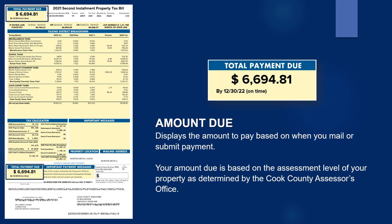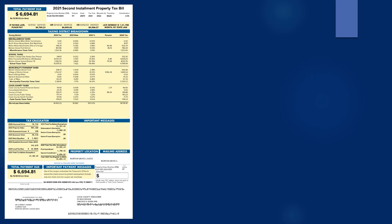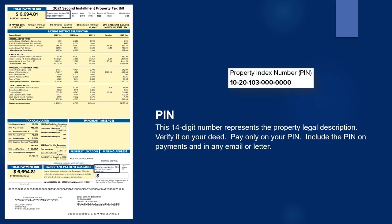The amount due displays the amount to pay based on when you mail or submit payment. The 14-digit property index number represents the property legal description. Verify it on your deed. Pay only on your PIN, and include the PIN on payments and correspondence.